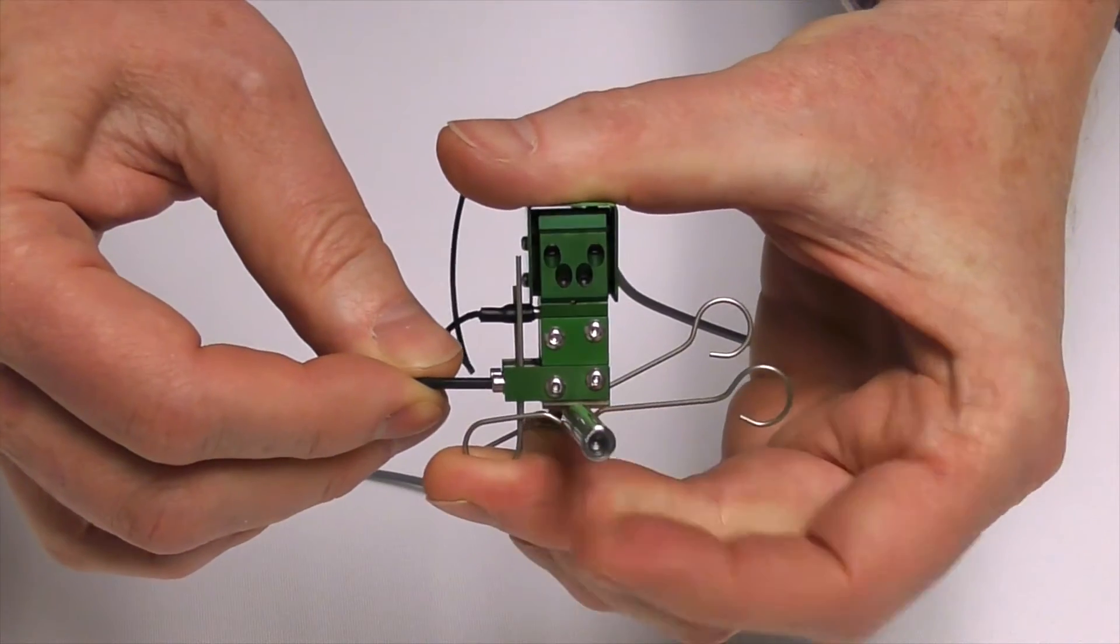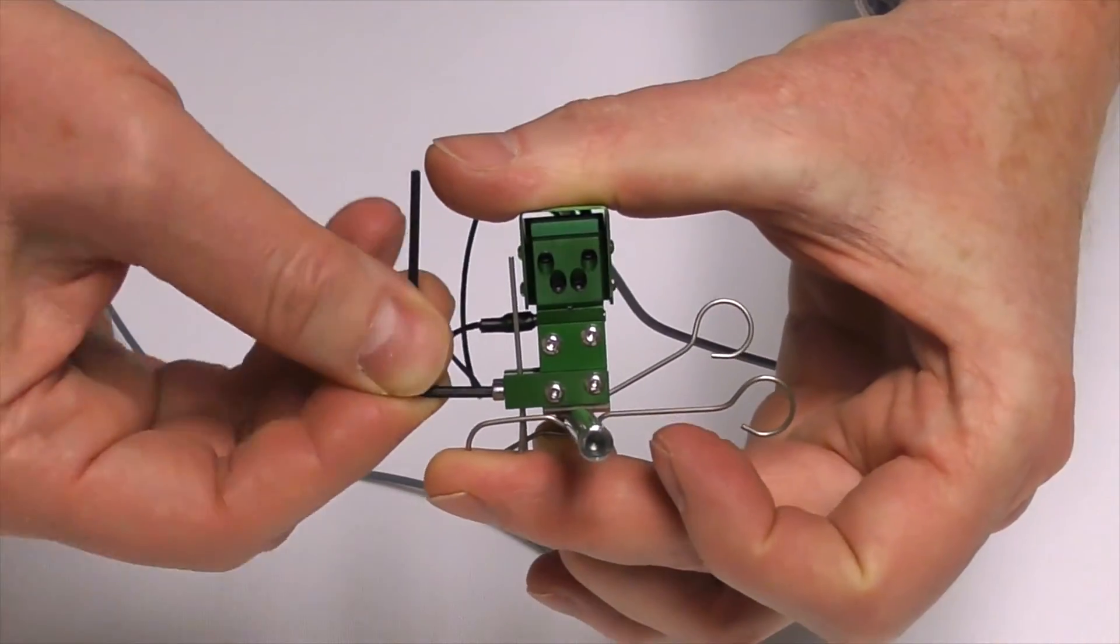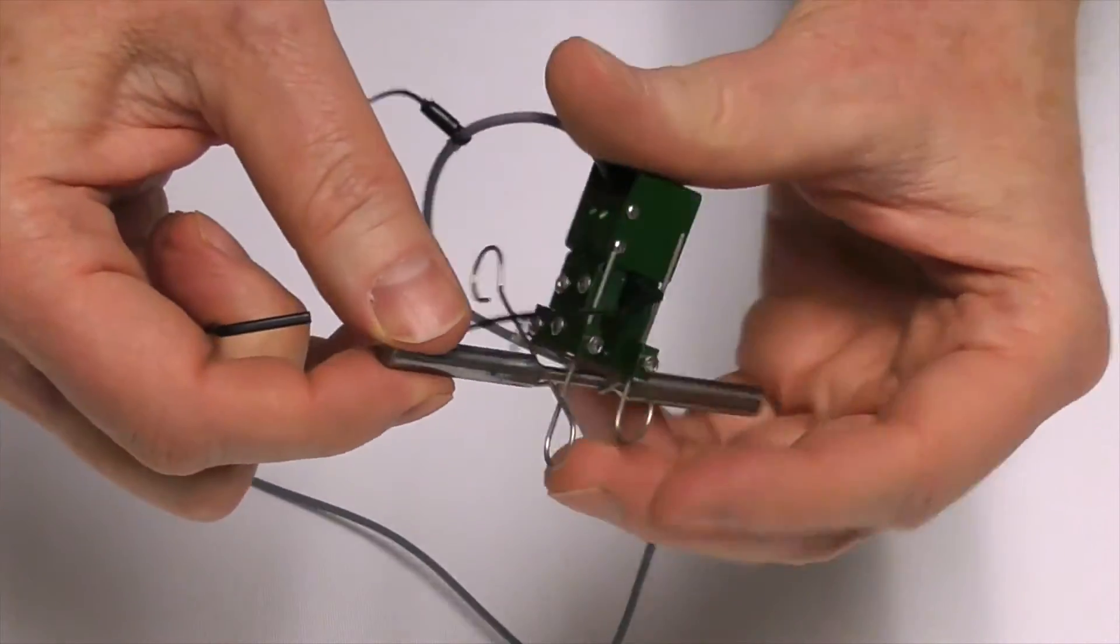Adjust the wire forms for the specimen. The wire forms should be parallel to the knife edges with the extensometer attached to the specimen.